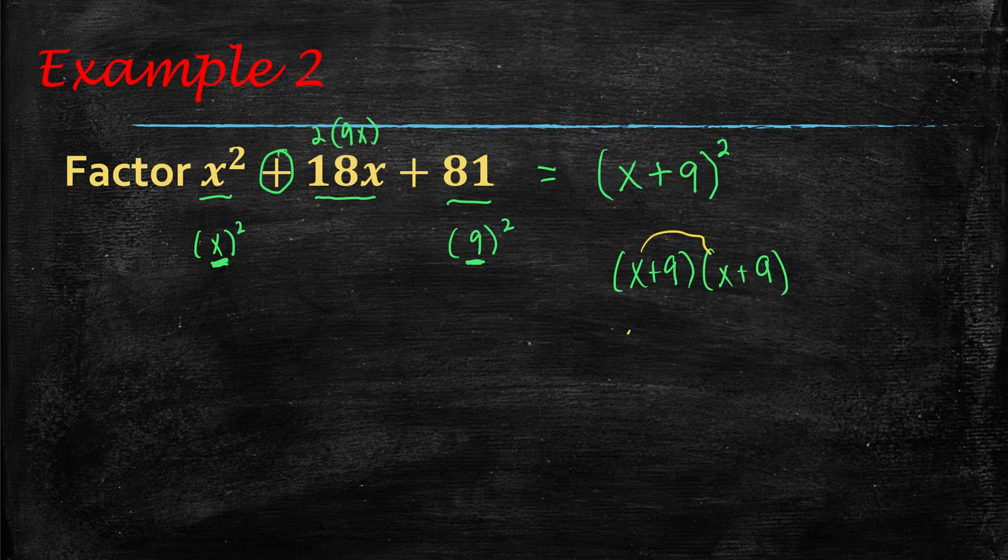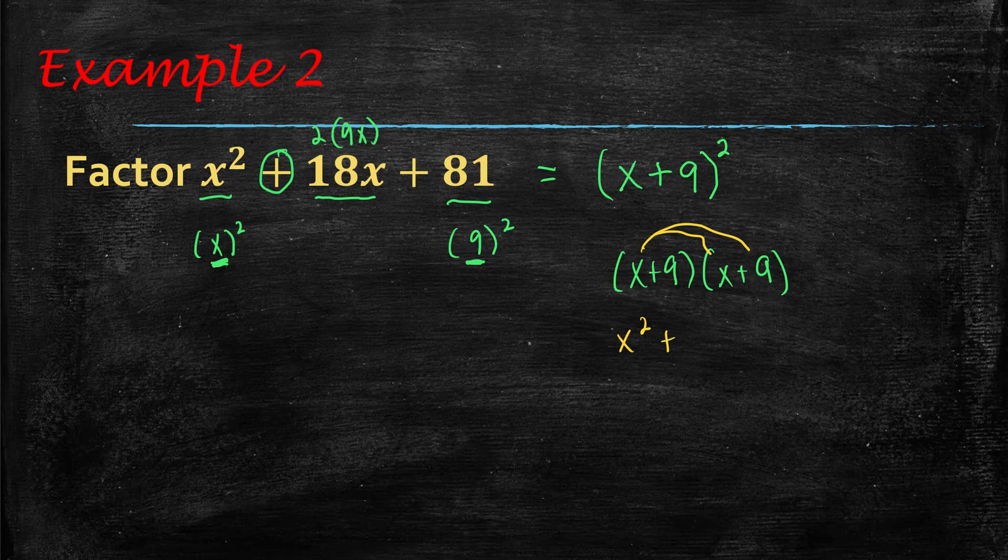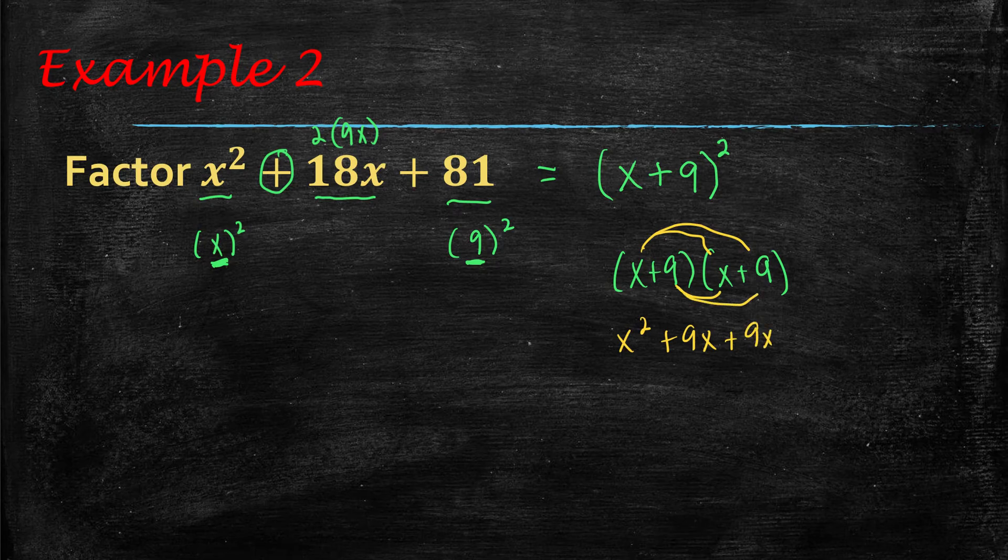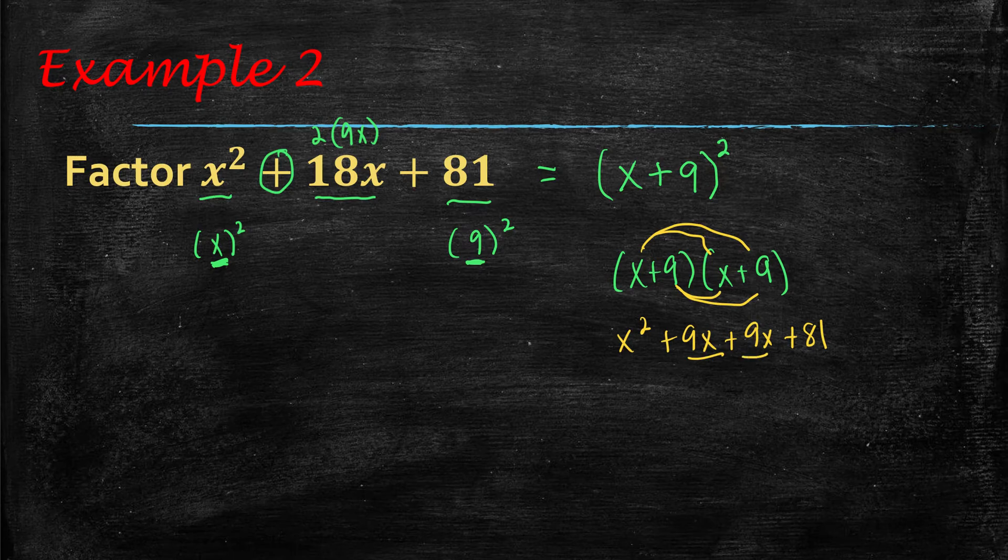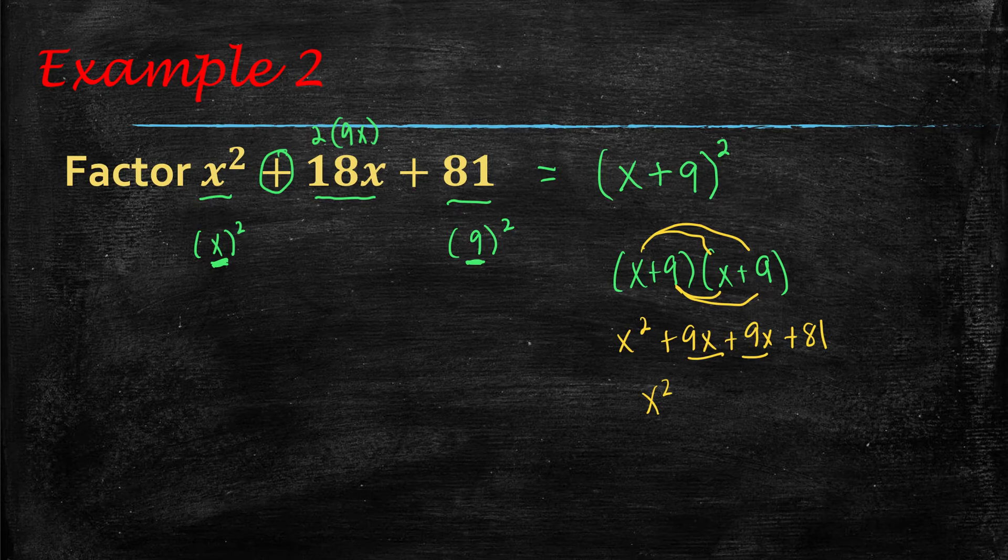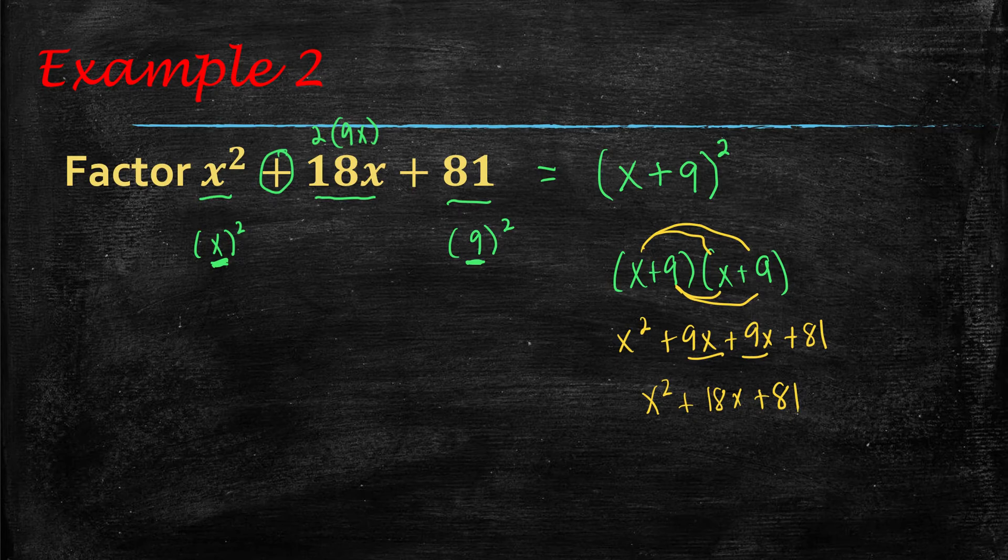x times x, x squared, x times 9 is 9x, 9x, and then 81. So notice, because the middle terms, you're getting the same thing, that's why it's double that. So x squared plus 18x plus 81. So you can see that it does in fact work. This would be your answer.